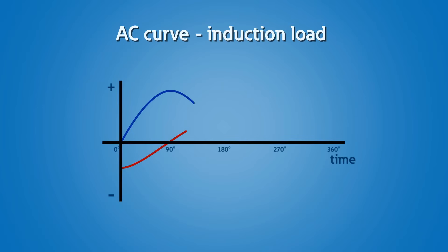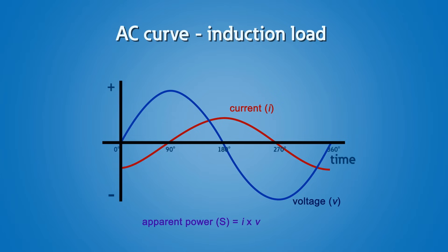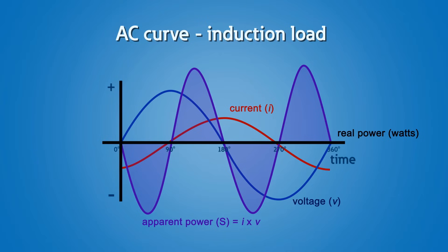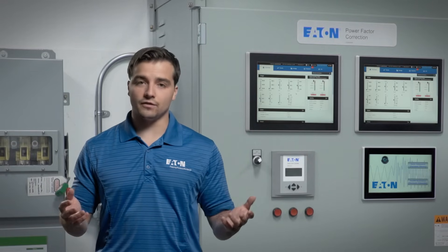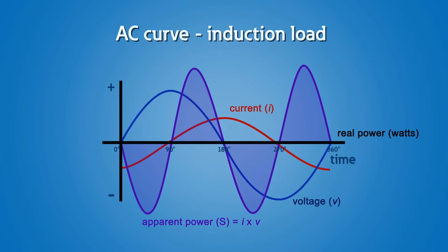Let's see what a purely inductive load would look like. Notice how the current lags the voltage by 90 degrees. Calculating the power yields two positive and two negative areas in the curve. This is why reactive power is also called imaginary power. The inductor is actually charging and discharging twice each cycle to yield no net power consumption. There is still a real current associated with this imaginary power that travels through the wires, but it just oscillates back and forth through the inductor and yields no work, just a magnetic field. There are two complete power cycles for every one 60-hertz voltage cycle.